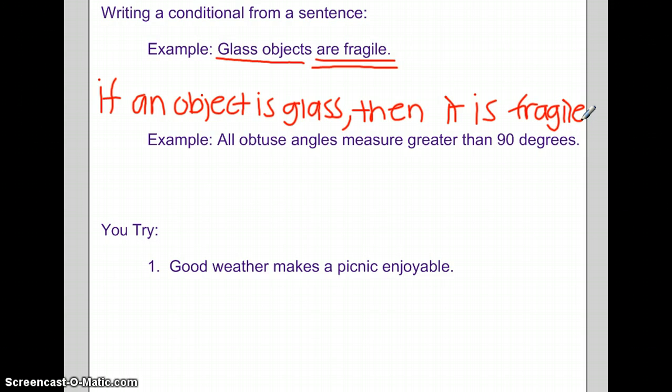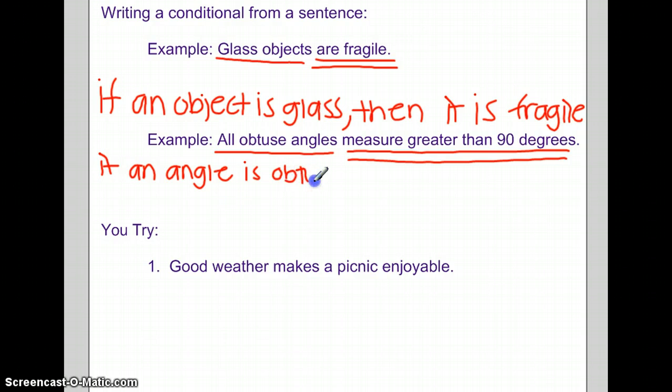Let's try the next one. All Obtuse Angles measure greater than 90 degrees. Our Hypothesis is all Obtuse Angles, and we know that they measure greater than 90 degrees is our Conclusion. So let's write that out. If an Angle is Obtuse, then the Measure is greater than 90 degrees.